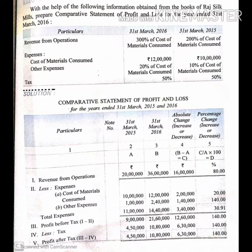To find the percentage change, just like in the comparative statement of balance sheet, the formula is: C divided by A multiplied by 100 equals D. That means 16 lakhs divided by 20 lakhs multiplied by 100, which gives us 80%.